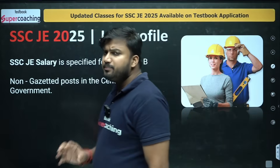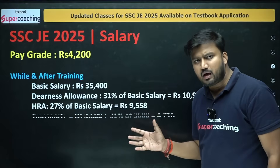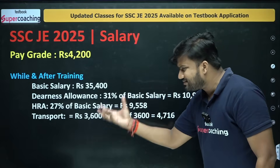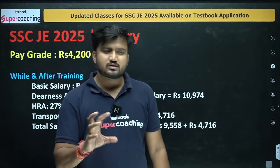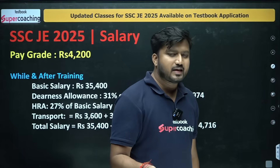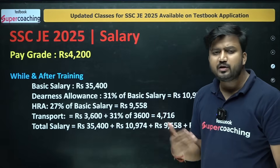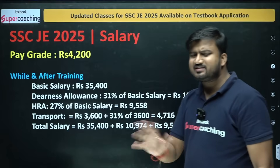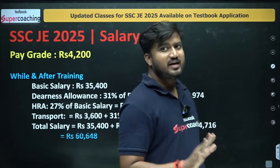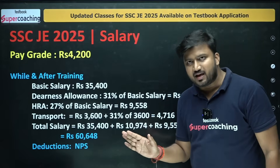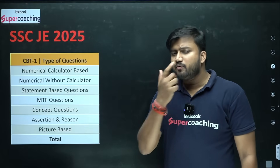SSC JE is a Group B post. Calculating the total salary including basic pay, DA, and HRA, SSC JE provides an approximate total salary of 60,000 to 65,000 rupees per month. It depends on the place and department you are working in, but the average salary is around 60,000 per month, which is a very decent and good salary.